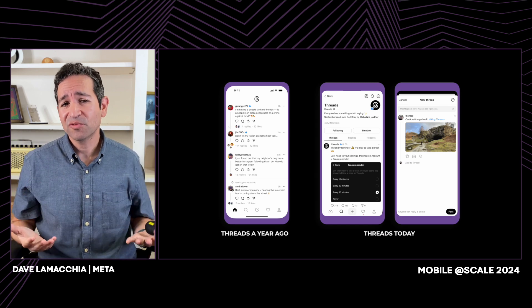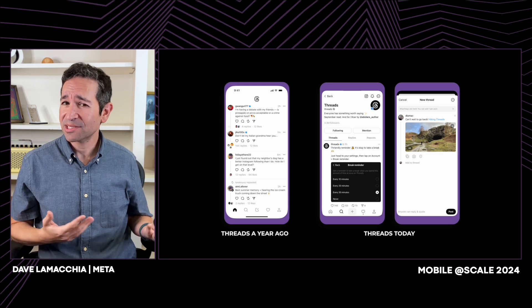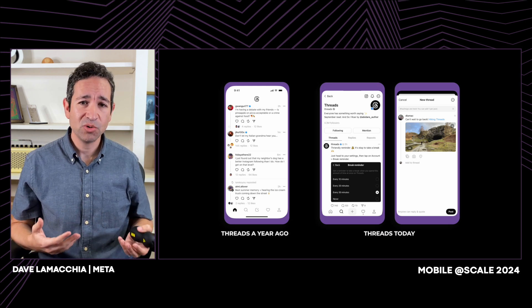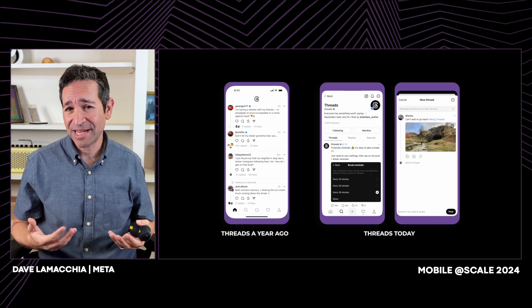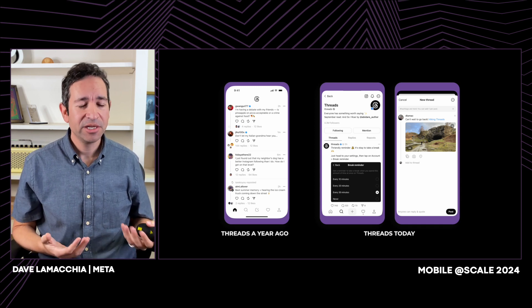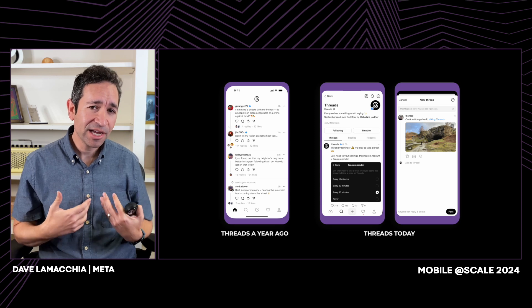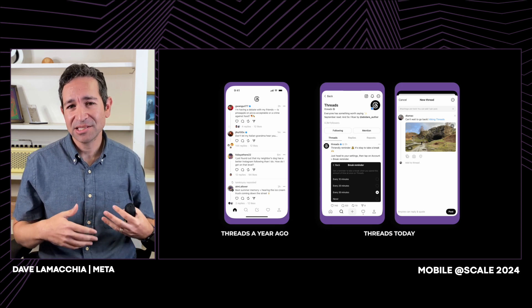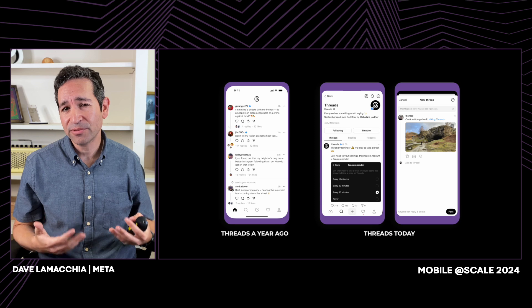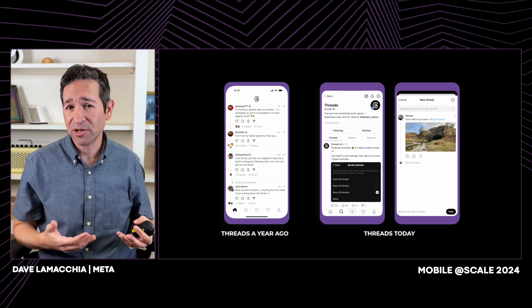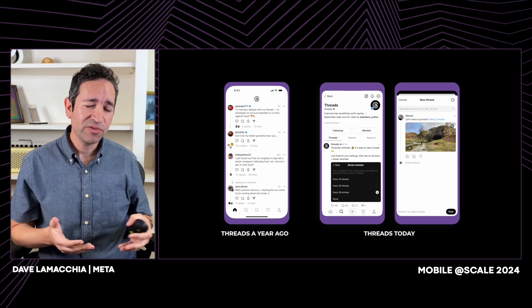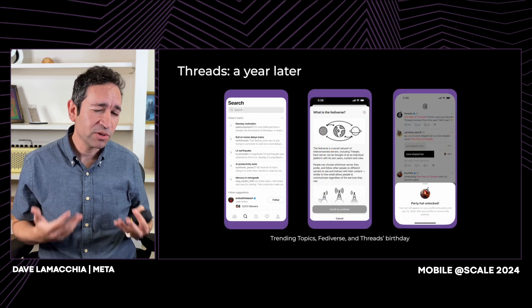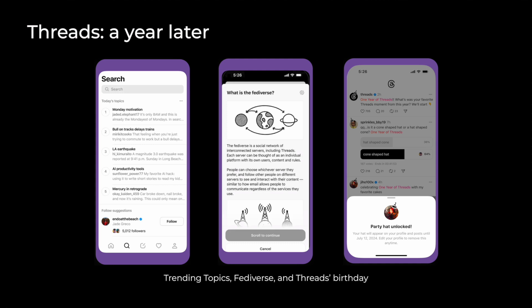There have also been a lot of performance features that aren't necessarily user-facing. For example, we reduced our app binary size, so the app is faster to download and faster to launch. It also takes half the time to build Threads compared to Instagram on non-incremental builds. We've also continued adopting modern Swift language features like Swift concurrency, which reduces data races and prevents crashes.